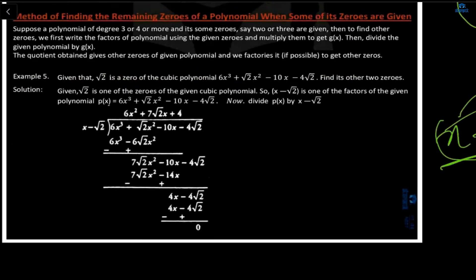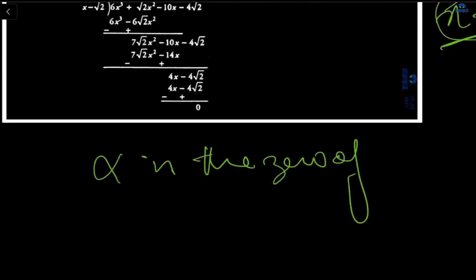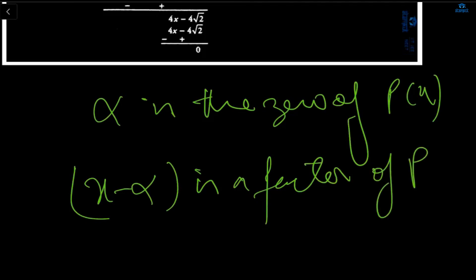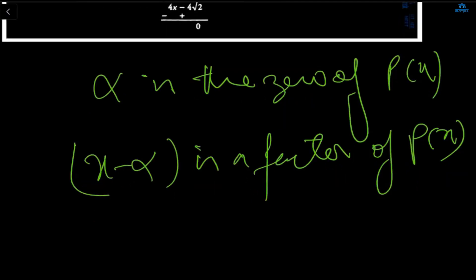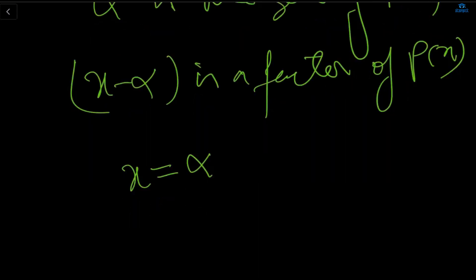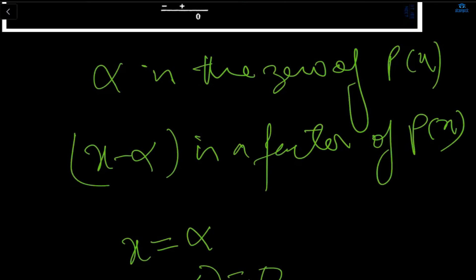For example, given that root 2 is one of the zeros of a cubic polynomial, as it is cubic the maximum zeros will be three. Only one zero is given — root 2. From the zero you need to find the factor. Whenever alpha is a zero of polynomial px, that means x minus alpha is a factor of px. So if root 2 is the zero, x minus root 2 is a factor, and you divide px by this factor to find the other two zeros.